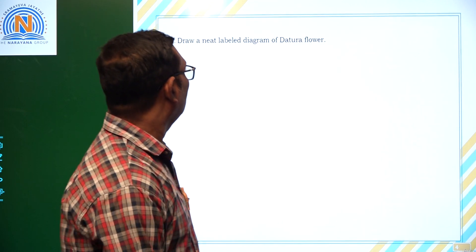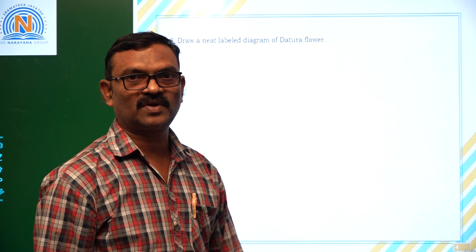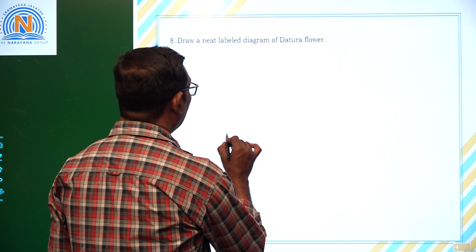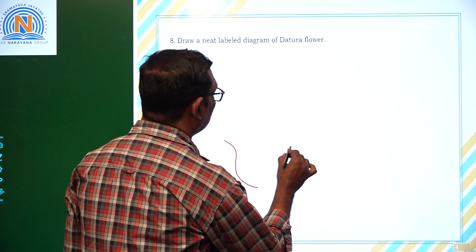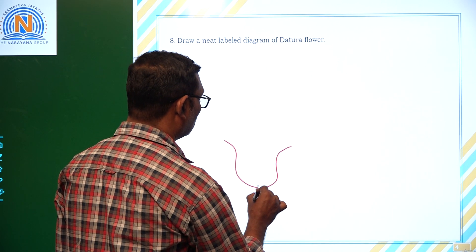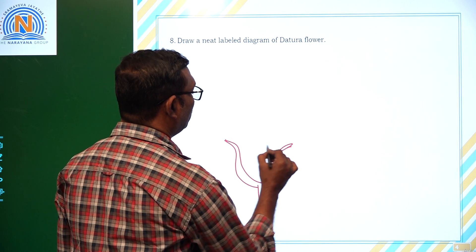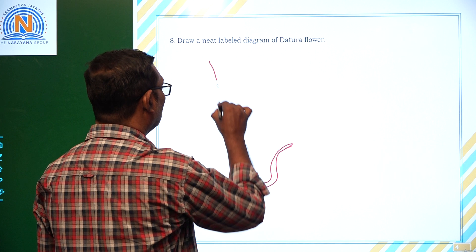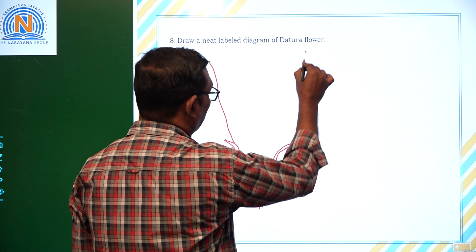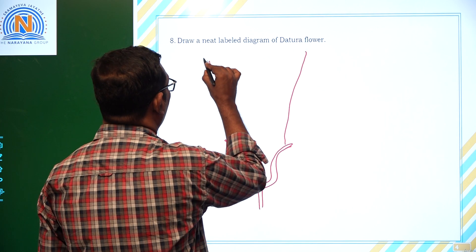Next, last question: Draw a neat labeled diagram of Datura flower. Now, let us see. I will show you how to draw Datura flower with easy steps. First, we have to draw like this. This one is a base for flower. All the floral parts are arranged on it.